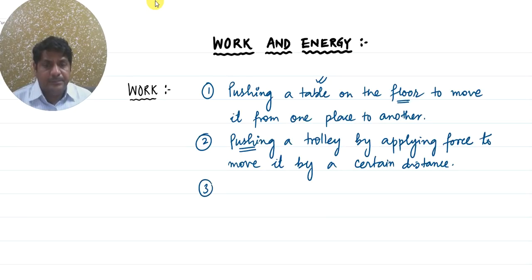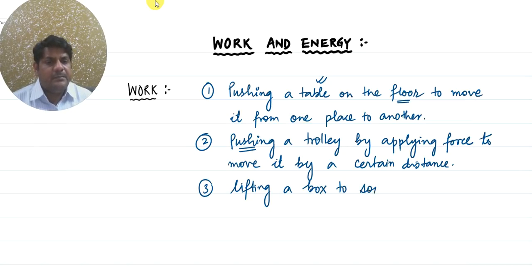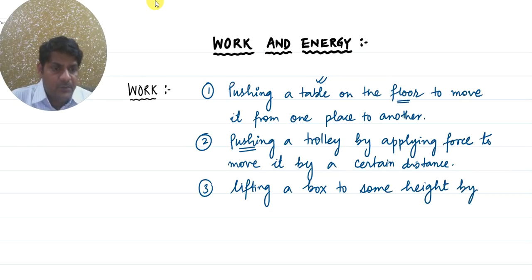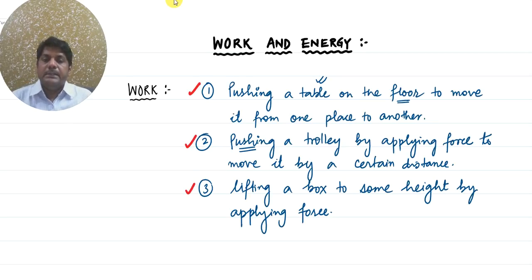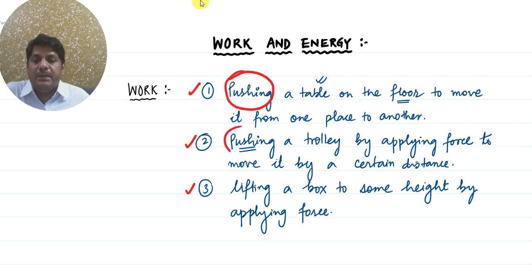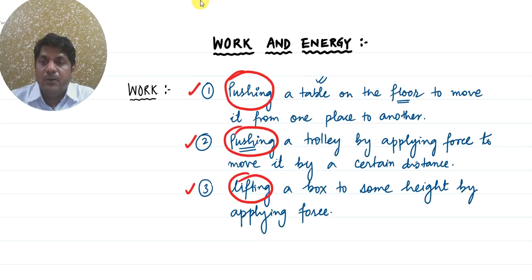Or let us take a third example — lifting a box to some height by applying force. If you look at all three conditions — pushing a table, pushing a trolley, or lifting a box — the first and foremost condition is we need to apply a force. So the first condition to say that we have done some work is application of force.